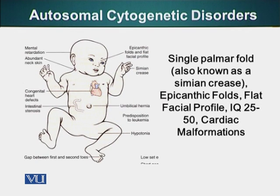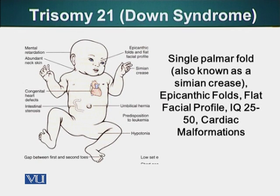The severity of the disease in mosaic patients depends upon the degree of mosaicism — that is, how many normal cells the individual has. Some features of this disease include the single palmar fold, which is a very significant and clearly visible feature in most of these patients. This is also called the simian crease.